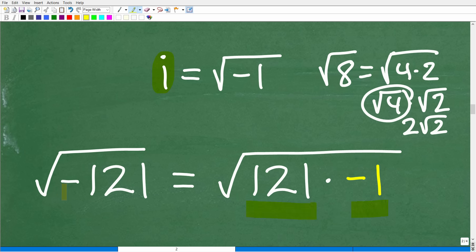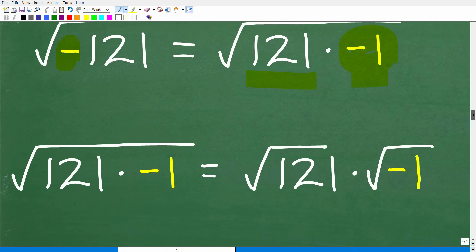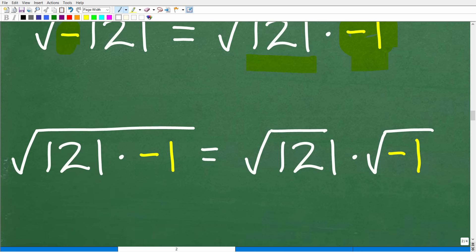Okay, so I'm basically going to get rid of this negative in front of the 121, and I'm going to kind of isolate it over here as a negative one. Now, that's going to really help us out because now I can split this one big square root over these factors into two individual square roots. So this is going to be equal to the square root of a positive 121, which of course we know the answer to, times the square root of negative one.